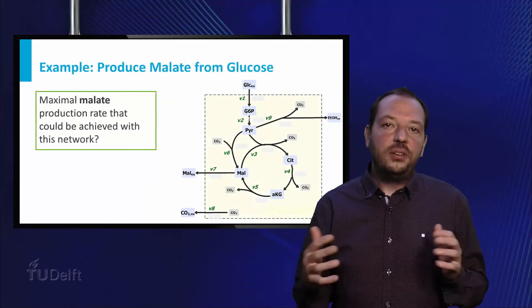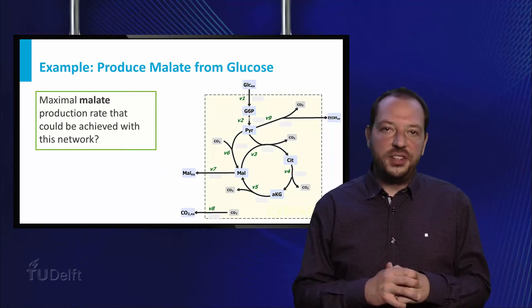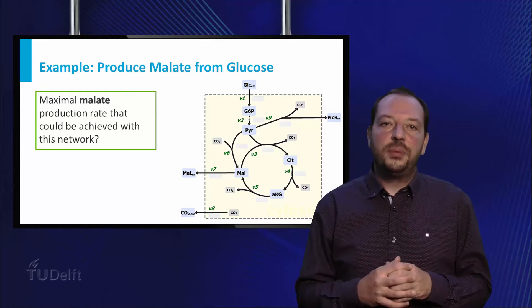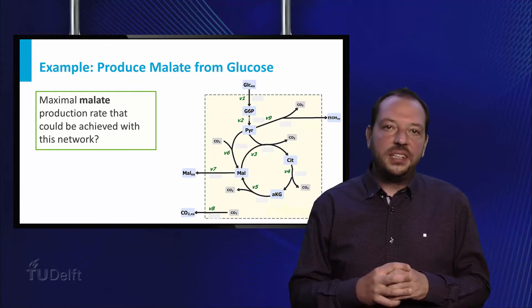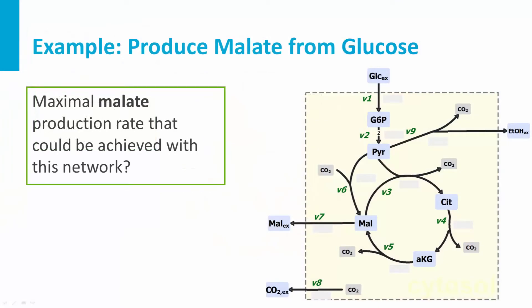Typically, cellular networks will be represented as reaction network graphs with the metabolites as nodes and the reactions as edges. In this lecture, we will use a very simplified cellular network representing central carbon metabolism in a condensed form. The cell takes up glucose and converts this into glucose-6-phosphate, the first intracellular metabolite in this network.